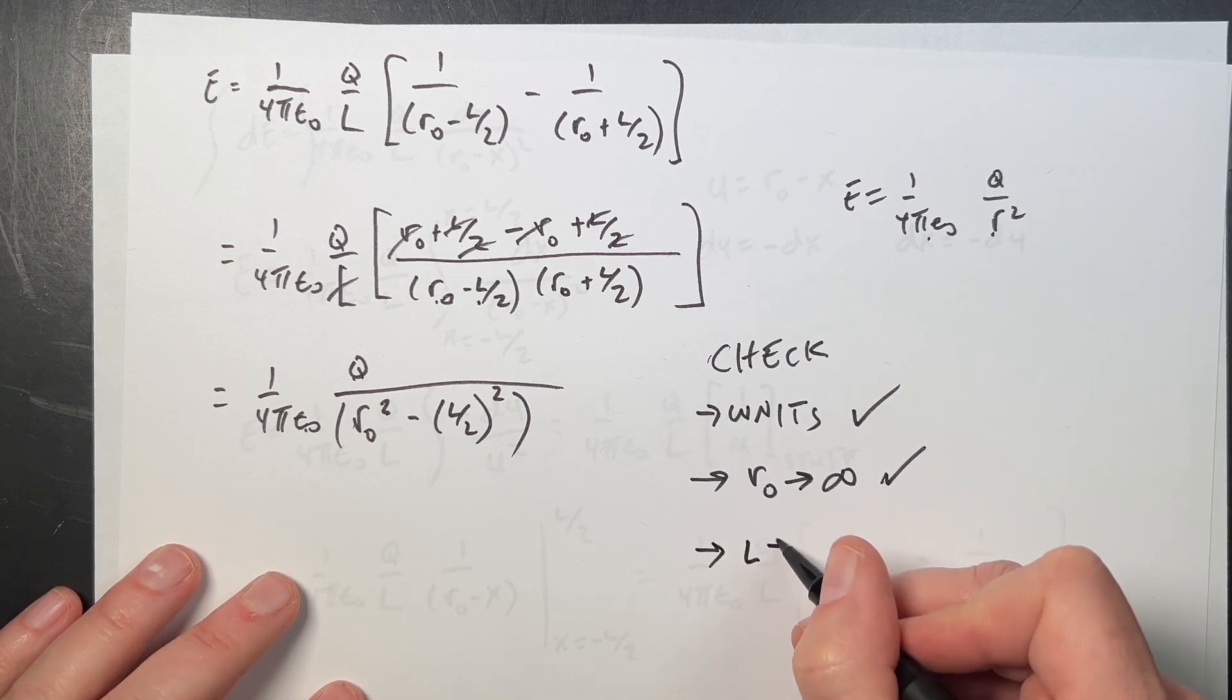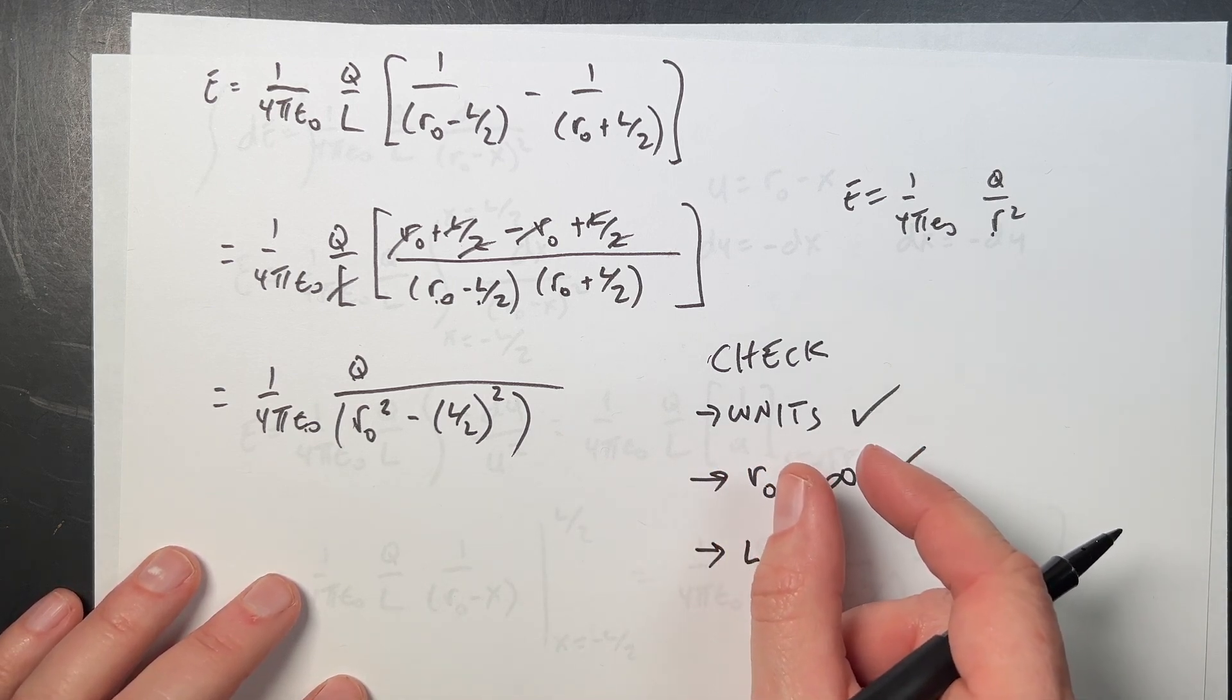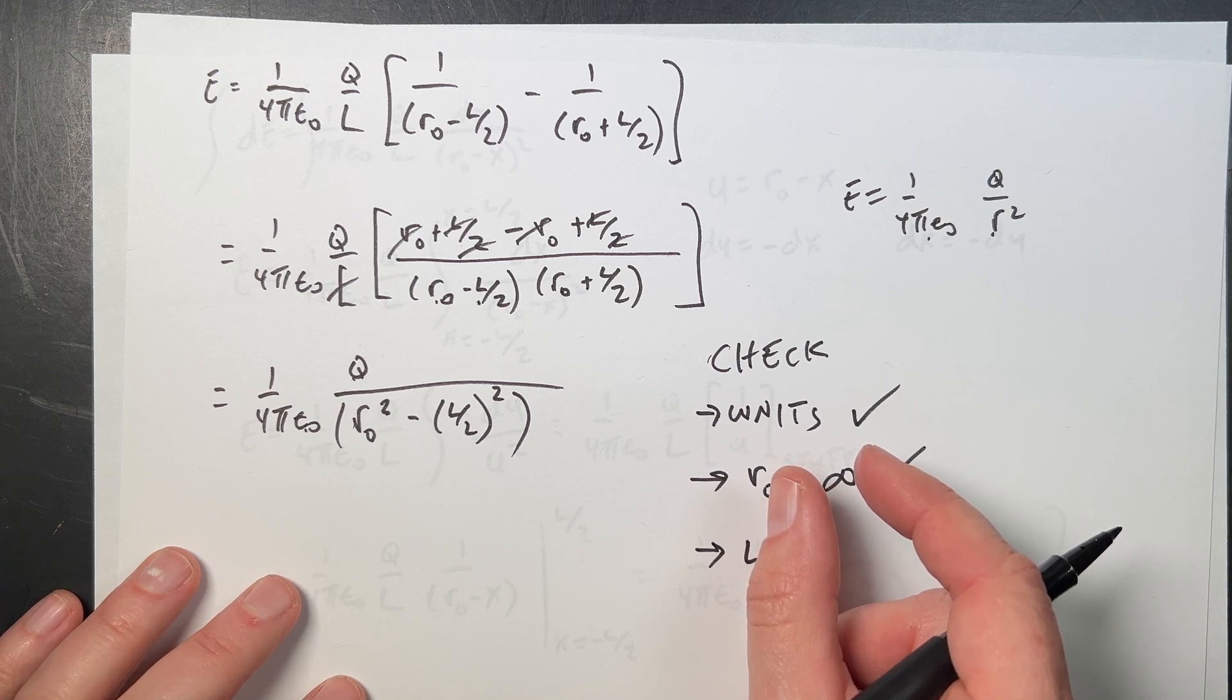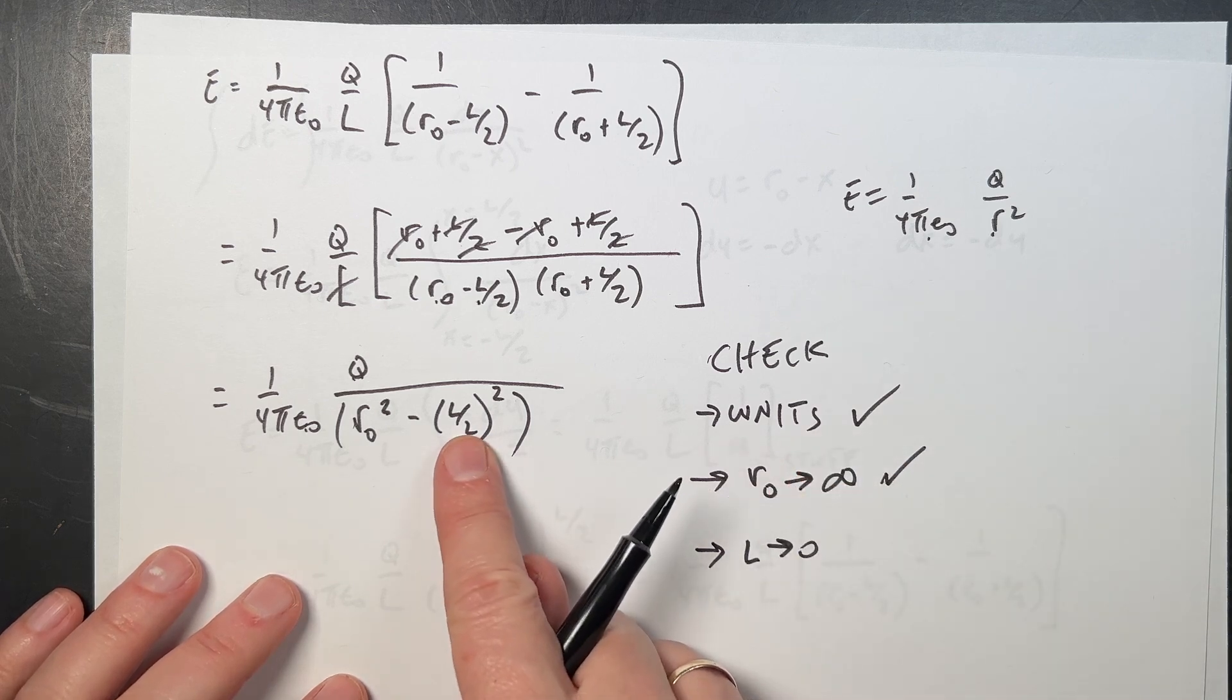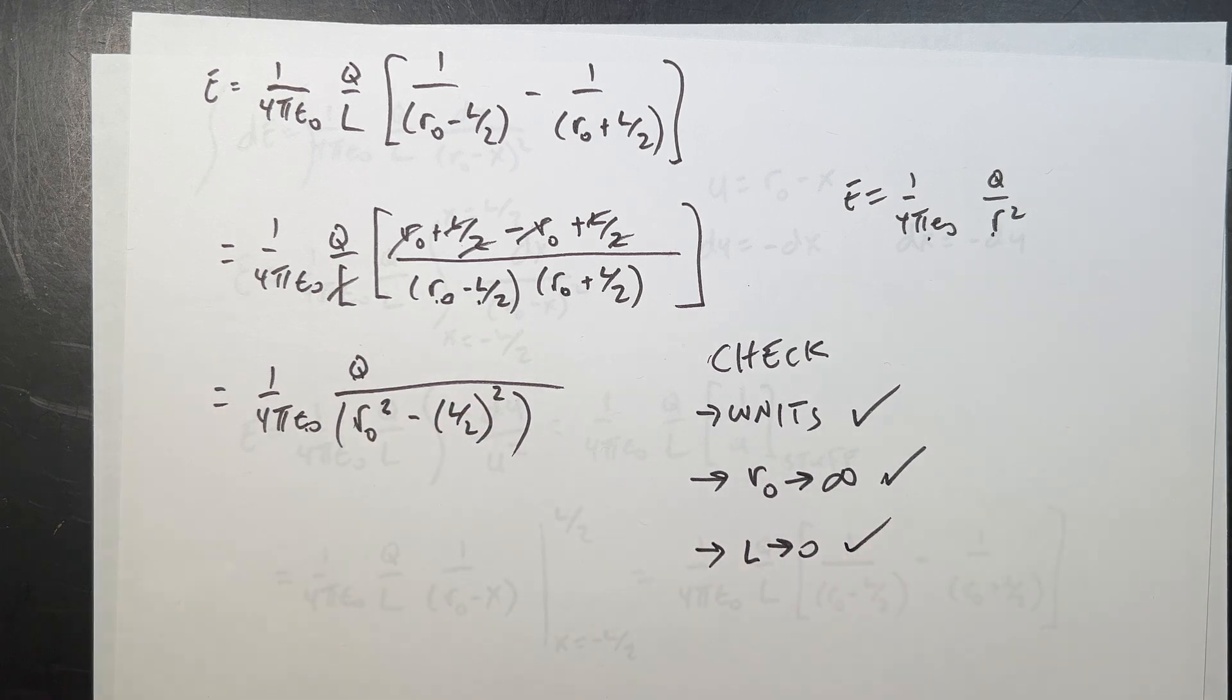What about as L goes to zero? If I take my length and let it get really, really, really tiny, then it should be a point charge. If I put in L equals zero, I get the point charge. So I'm done.